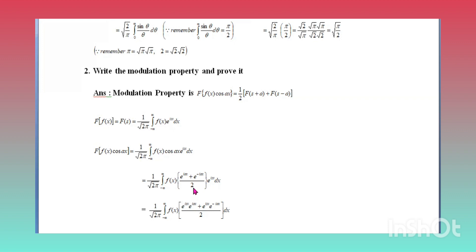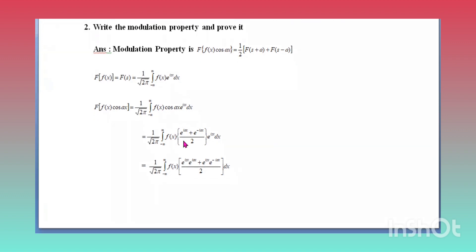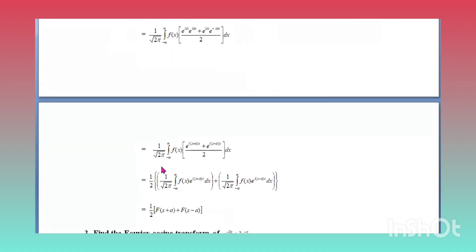Applying the formula, we get (1/√(2π)) times the integral from −∞ to +∞ of f(x)·[(e^(iax) + e^(−iax))/2]·e^(isx) dx. Multiplying each term by e^(isx) gives (1/√(2π)) times the integral of f(x)·[e^(i(s+a)x) + e^(i(s−a)x)] / 2 dx.